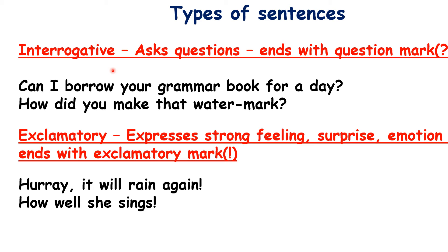Interrogative sentences ask questions and end with a question mark. Examples: 'Can I borrow your grammar book for a day?' — question mark. 'How did you make that?' — question mark. 'When will you meet me?' — question mark. 'Shall we go out?' — question mark. All these are interrogative sentences. They are easy to identify because they end with a question mark.